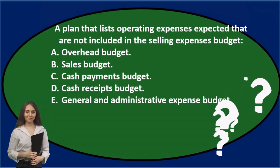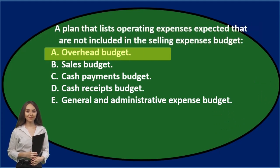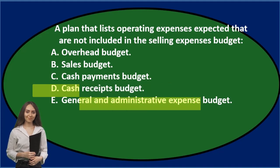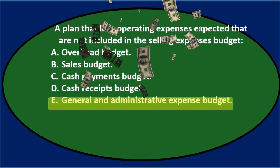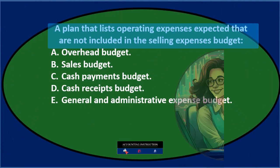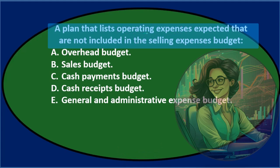A plan that lists operating expenses expected that are not including the selling expenses budget. A: Overhead budget. B: Sales budget. C: Cash payments budget. D: Cash receipts budget. E: General and administrative budget. Let's go through this again using the process of elimination. A plan that lists operating expenses expected that are not included in the selling and administrative expenses budget. That's kind of a strange explanation, but we can see we have operating expenses.